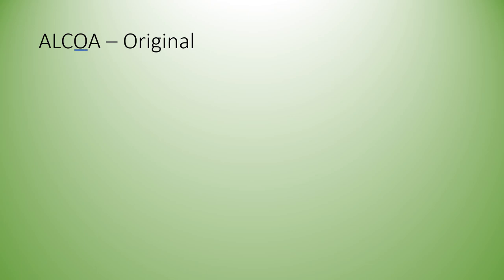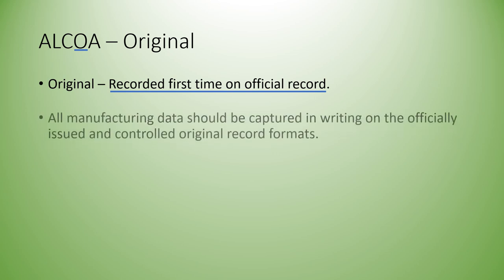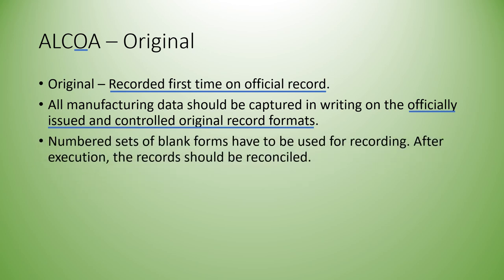The fourth letter O is for Original, which means the data recorded for the first time on the official record. First-time captured or recorded data is considered original. This should be done on an official document — official means controlled and issued by the designated authority, which is generally the QA department. All such records will be reconciled and archived for further review. Numbered sets of blank forms have to be used for recording; after execution, the records should be reconciled. Sequential numbering is done to track usage and confirm that there are no missing records.